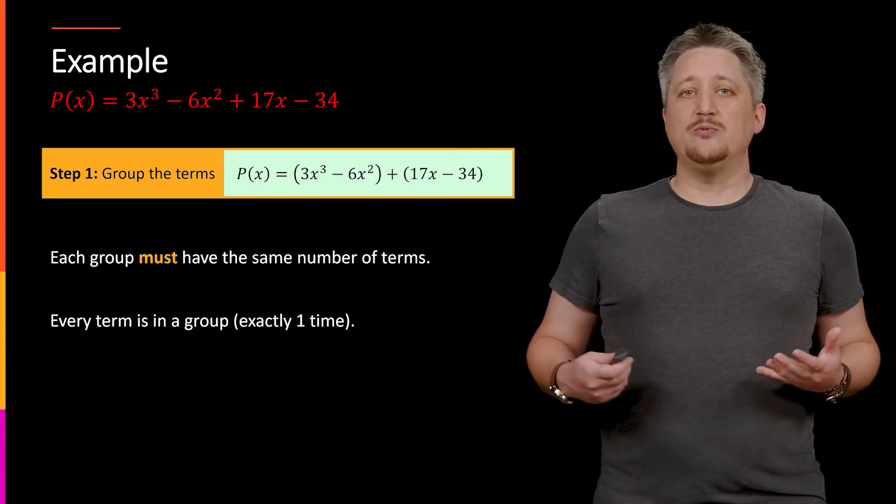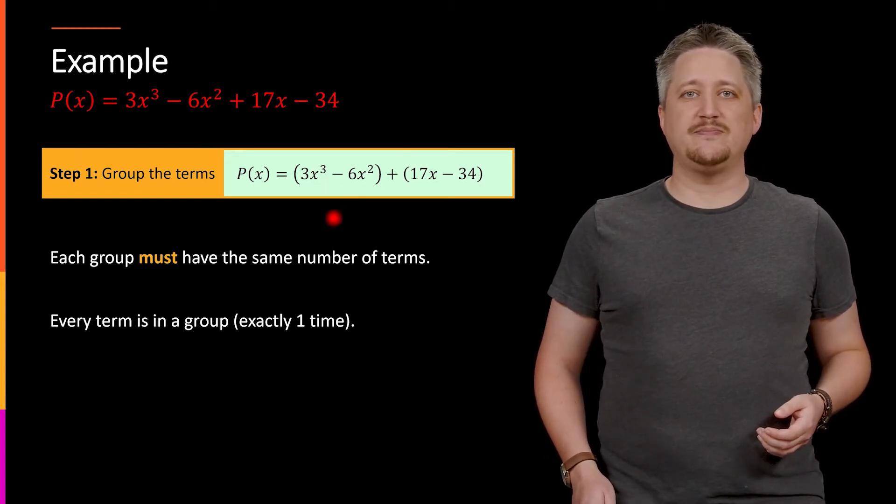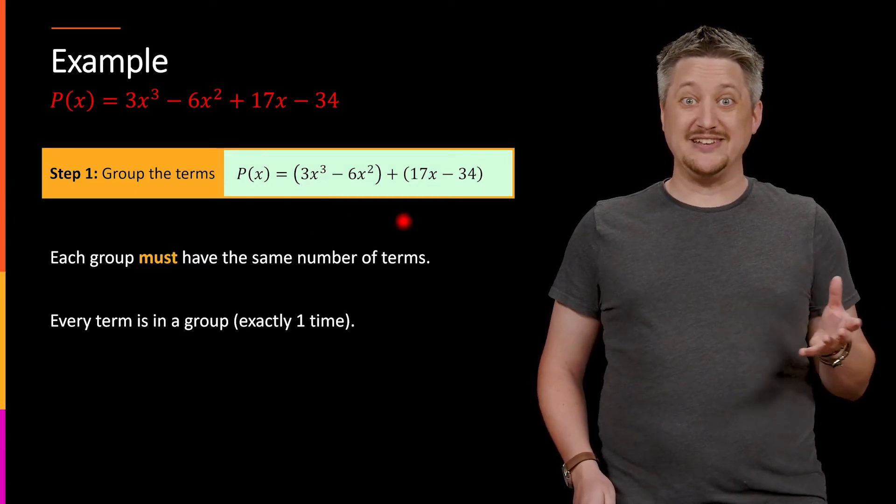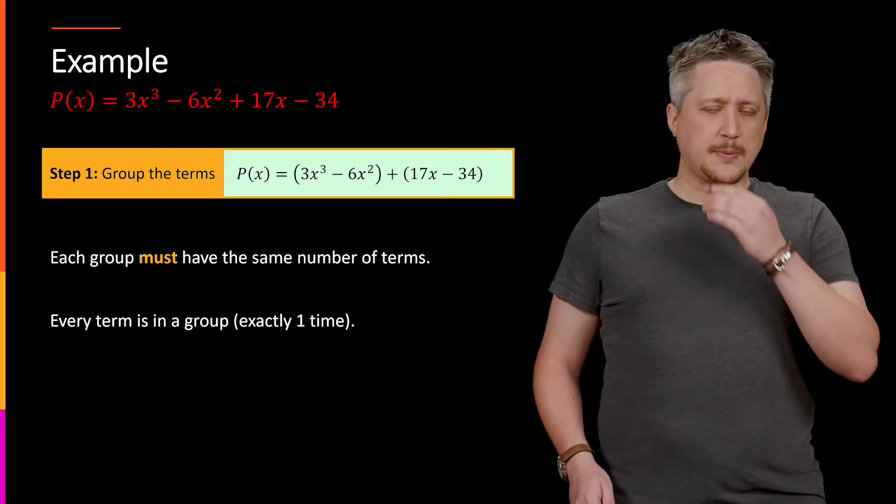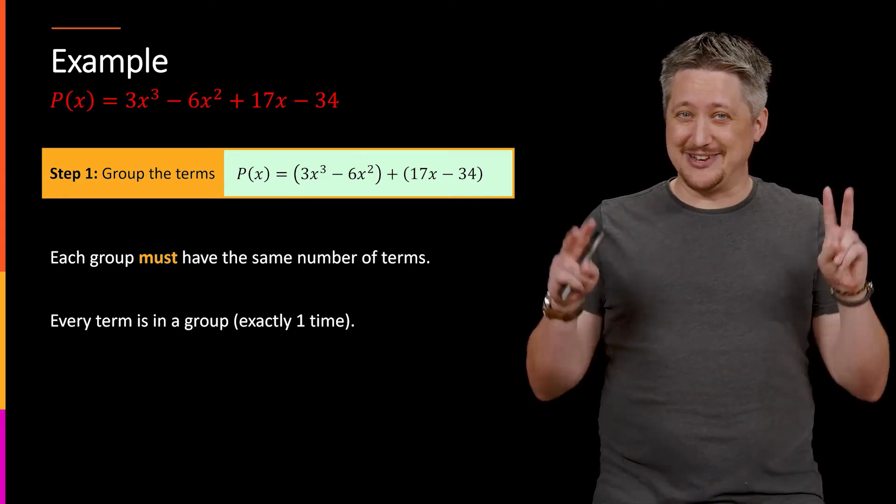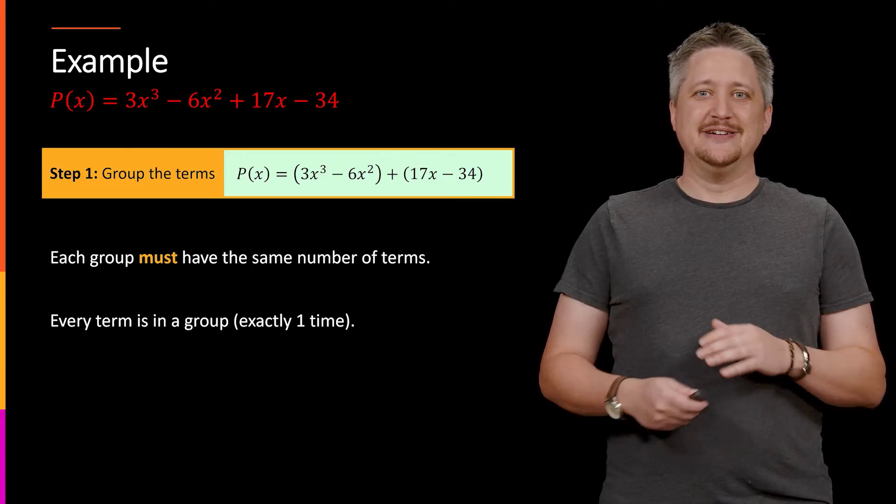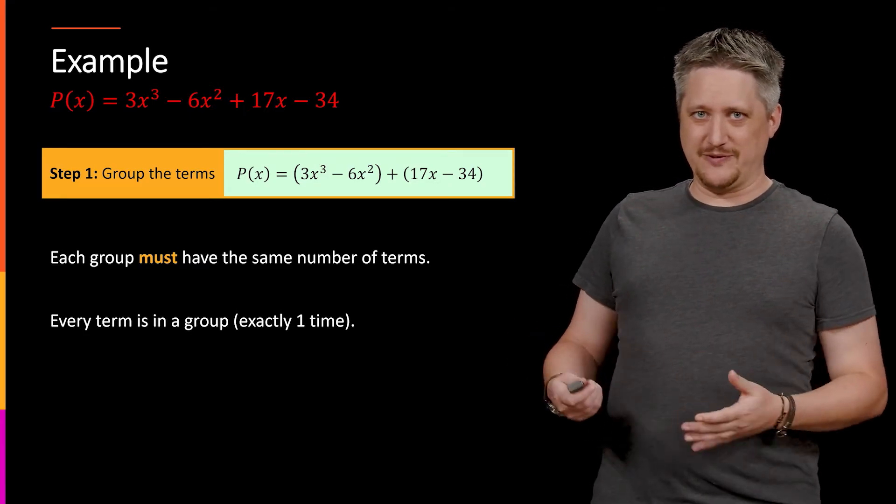So here with our given polynomial, we can break it up like this. We have the first two terms grouped together. I'm just throwing parentheses around it to signify that's the plan. And the last two terms are together. Now, it's worth noting that technically speaking, how you group these won't matter. It will always factor if it's going to factor or won't if it won't factor.